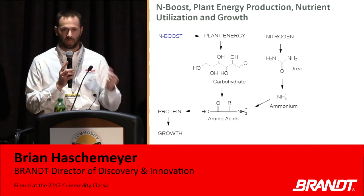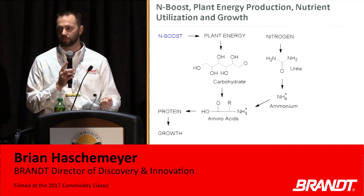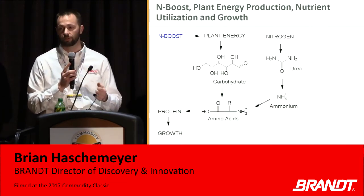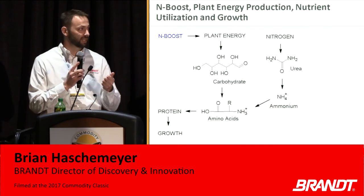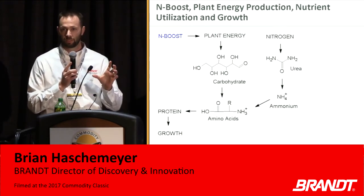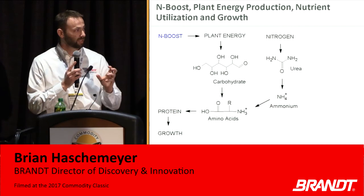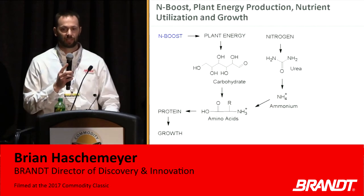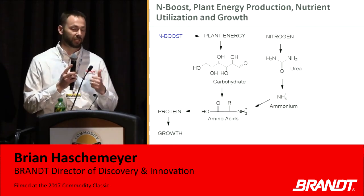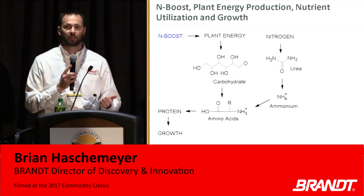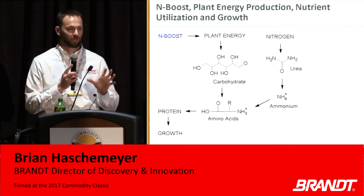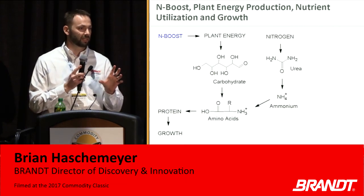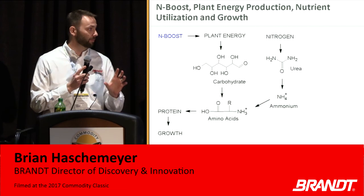In order for N-Boost to really work, you have to have sufficient nitrogen available. You can't skip applying nitrogen, apply N-Boost, and expect a response. What it does is take the existing nitrogen — particularly from ammonium sulfate or urea sources — drives it from the photosynthates and sugars, and pulls them together into amino acids and protein at the growth point. When people talk about nitrogen utilization, they're usually thinking about stabilizing nitrogen, urease inhibitors, and things along that line. This is different — we're acting on the plant cells themselves to take existing ammonical nitrogen within the plant and associate it into proteins and amino acids.